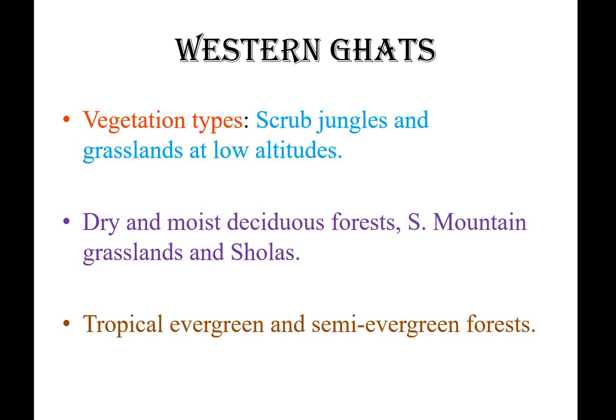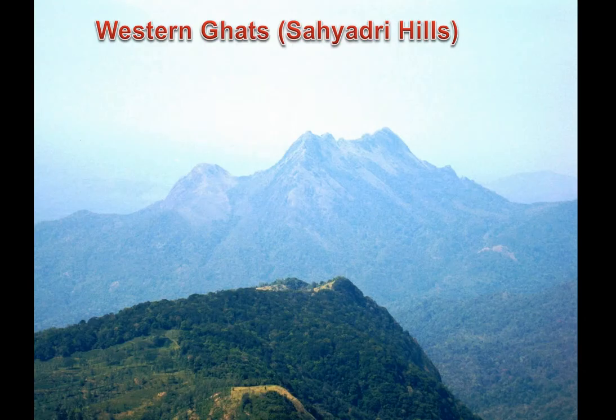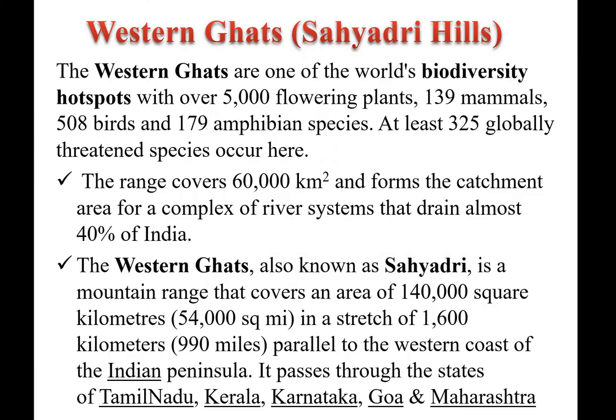Regarding the type of vegetation in the Western Ghats: scrub jungles and grasslands at low altitudes, dry and moist deciduous forests, grasslands and sholas, and tropical evergreen and semi-evergreen forests. The Western Ghats, also known as Sahyadri hills, are one of the world's biodiversity hotspots with over 5,000 flowering plants, 139 mammals, 508 bird species, 179 amphibian species, and at least 325 globally threatened species.